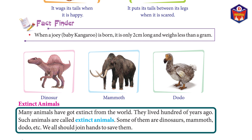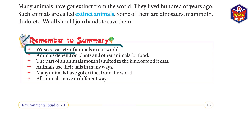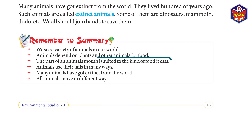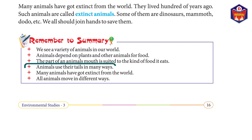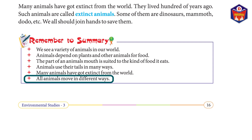Summary: we see a variety of animals in our world. Animals depend on plants and other animals for food. The part of an animal's mouth is suited to the kind of food it eats. Animals use their tails in many ways. Many animals have got extinct from the world. All animals move in different ways.